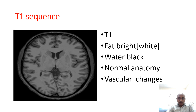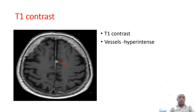Let us study one sequence at a time. The first sequence is T1. In T1, fat looks bright white — this includes myelin — and water looks black, so the ventricles look black. You can use T1 for studying normal anatomy and vascular changes. With T1 contrast, when we give gadolinium contrast, we can see the vessels as hyperintense structures.